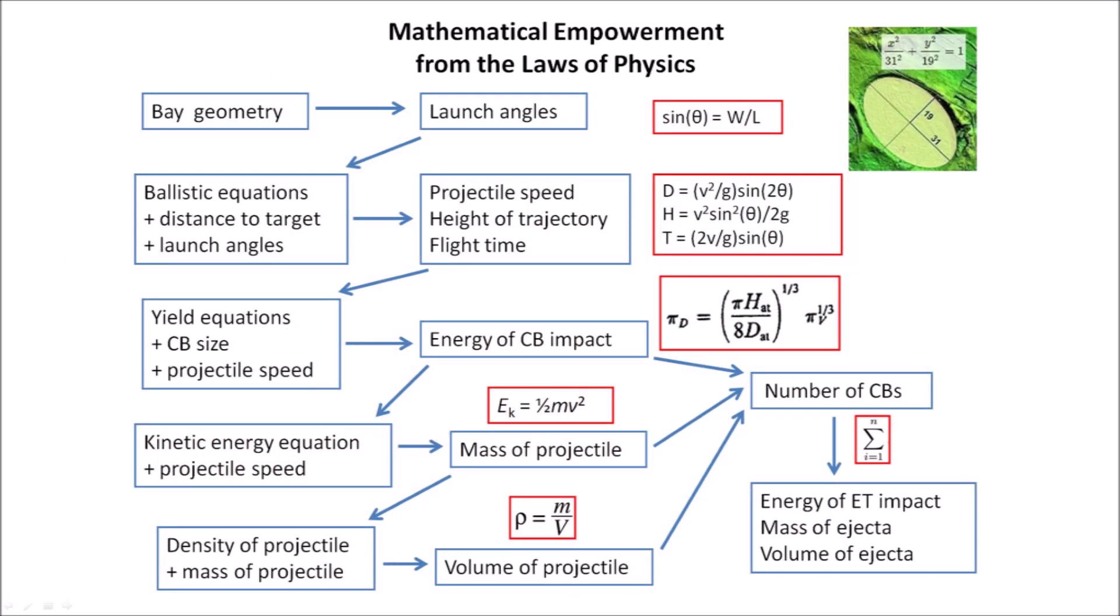The Glacier Ice Impact Hypothesis uses the laws of physics as the mathematical foundation for calculating the characteristics of the impact basins and the extraterrestrial impact. The conic sections representing the Carolina Bays and the convergence point by the Great Lakes provide the initial conditions for the physics-based model. The ballistic equations provide the velocities of the ice projectiles, yield laws correlating impact energy with crater size can be used to calculate the size of the projectiles. These calculations provide information about the extraterrestrial impact.